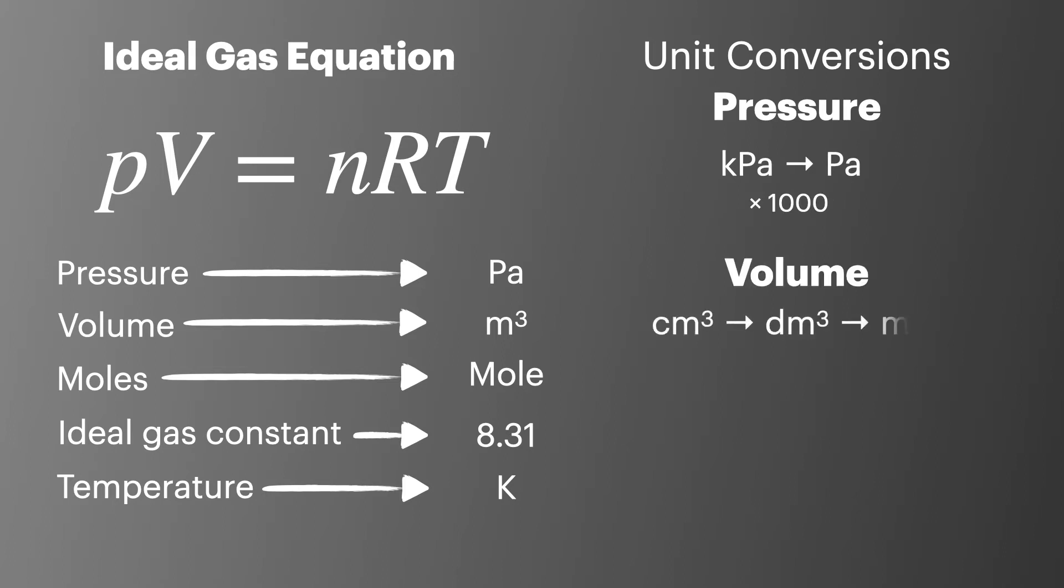For volume, which needs to be in meters cubed, it's often provided in centimeters cubed or decimeters cubed. It can be easier to remember the conversion as two steps. Divide by a thousand to go from centimeters cubed to decimeters cubed, and then divide by a thousand again to go from decimeters cubed to meters cubed.